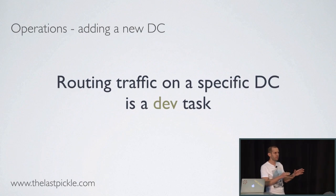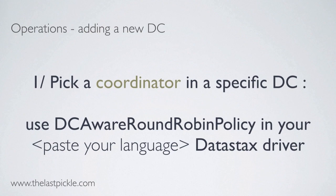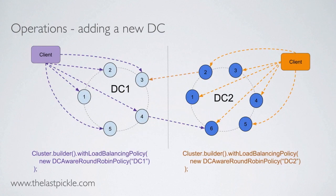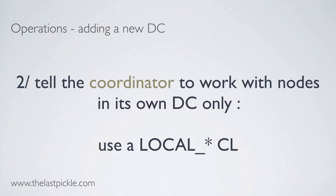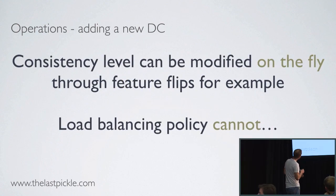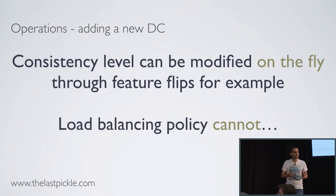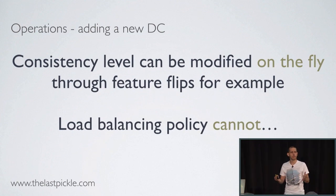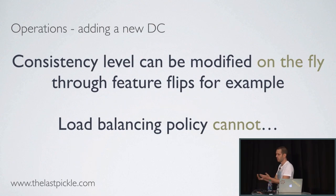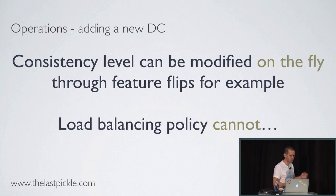Routing traffic to a specific DC is a dev task. You have to pick a coordinator node in a specific DC. This is done by using the DCAwareRoundRobinPolicy in your data stack driver, which allows you to create your cluster object setting the policy and giving it the local DC. So your app will only connect to a node in this specific DC. Then you have to tell the coordinator node to work only in the local DC using a local consistency level. Consistency level can be modified on the fly per query — you can use feature flags. A load balancing policy cannot, as it is set when you create your cluster object at app start.